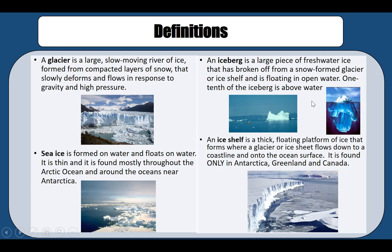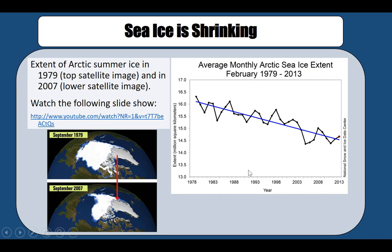Let's not confuse icebergs with sea ice — an iceberg is ice that floats on the ocean, with most of it submerged below and only a little visible on top. An ice shelf is a thick platform of ice that floats on the ocean, attached to ice sheets or glaciers where they meet the ocean. Ice shelves are typically found in Antarctica, Greenland, and Canada.